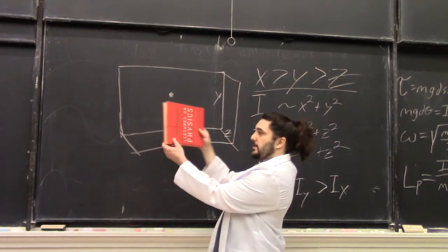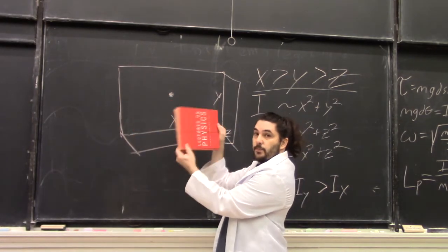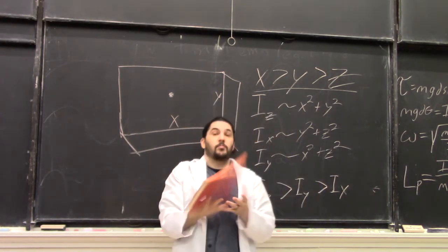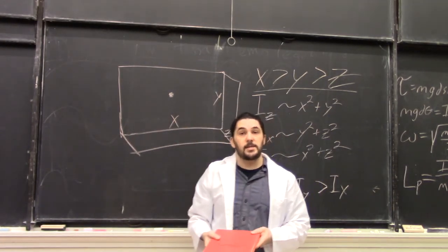Rotating about the y-axis, like so. And we noticed, rotating about the y-axis is the one that was unstable.